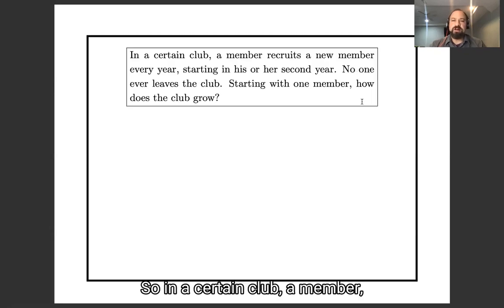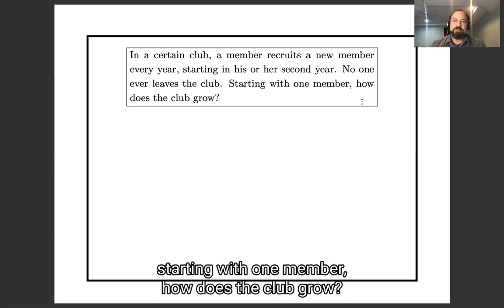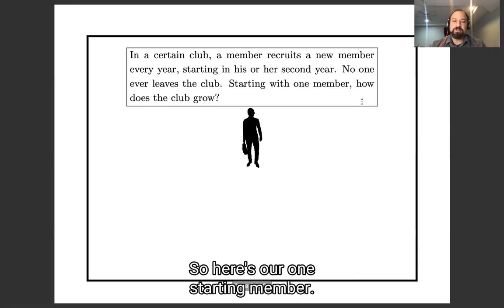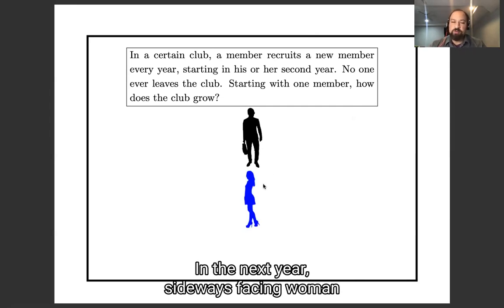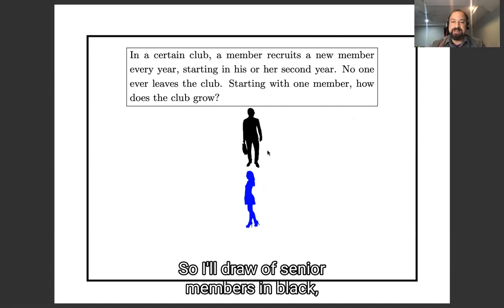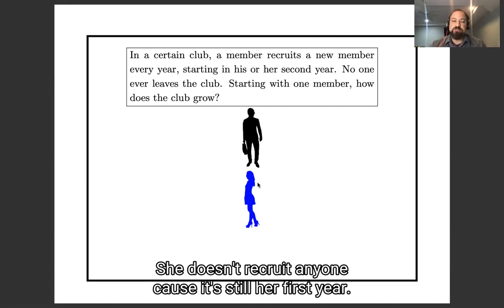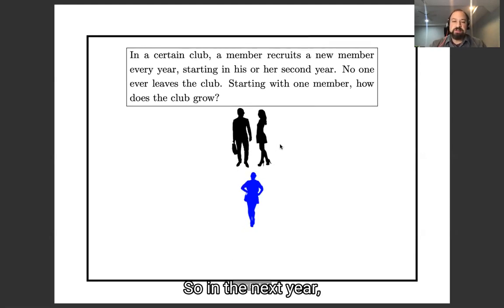In a certain club, a member recruits a new member every year, starting in his or her second year. In his first year in the club, he does not recruit anyone. No one ever leaves the club. Starting with one member, how does the club grow? Here's our one starting member. He recruits a second member. In the next year, she becomes a senior experienced member of the club. I'll draw the senior members in black and the new members in blue. She doesn't recruit anyone because it's still her first year, but the original member does.